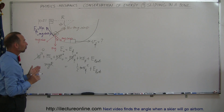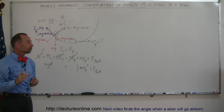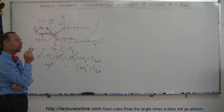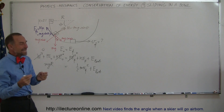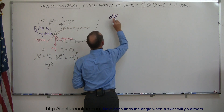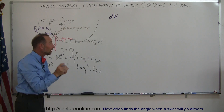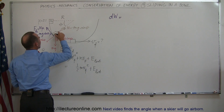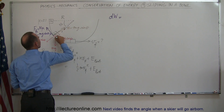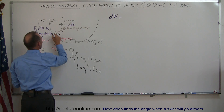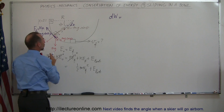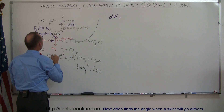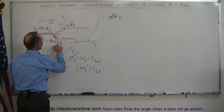Since the friction force changes constantly as the angle changes while sliding down, we need to find a way to express the energy lost. A small amount of energy lost, dW, occurs when the block moves a very small distance. When it moves through a very small angle dθ, the distance covered is the arc length dx = r dθ.